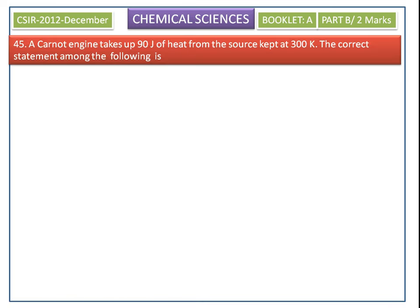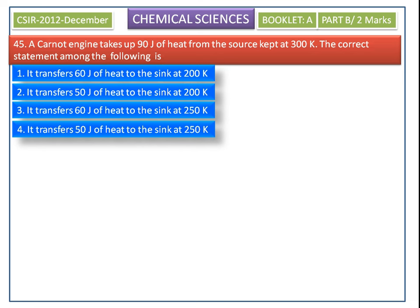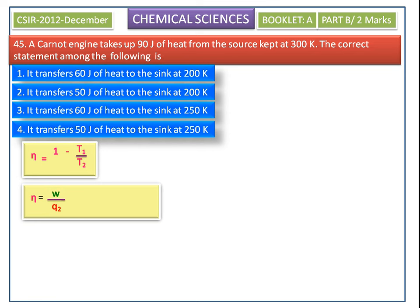A Carnot engine takes up 90 joules of heat from the source kept at 300 Kelvin. The efficiency of a Carnot engine is 1 minus T1 by T2, or otherwise we can write W by Q2.